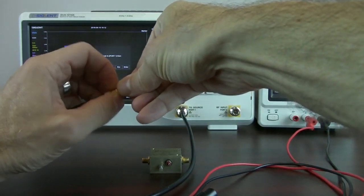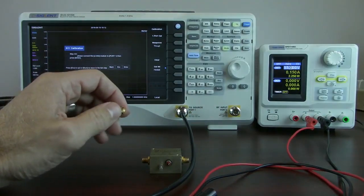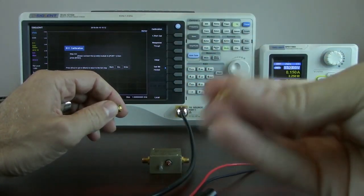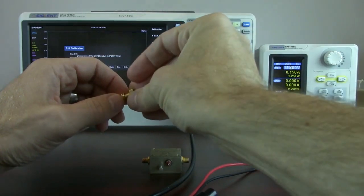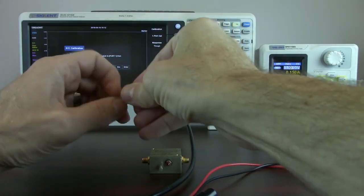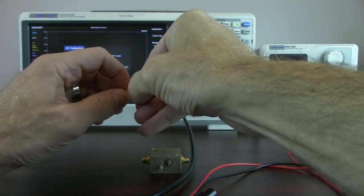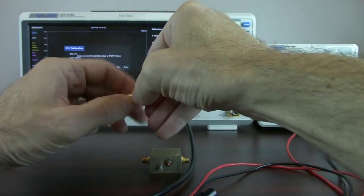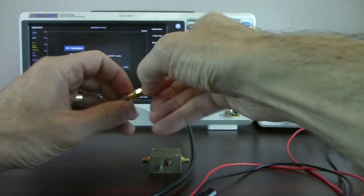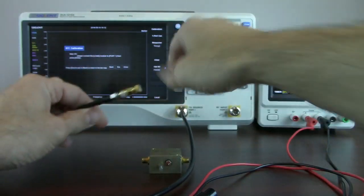So we're going to disconnect that short. And now we've got a load, this is a 50 ohm load, and we're going to connect that. And hit enter.